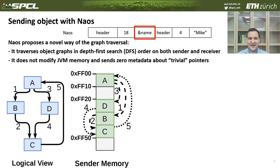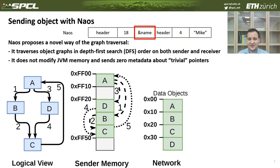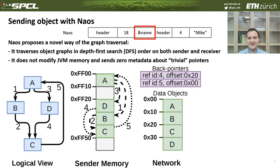Pointers four and five are extra pointers to already-visited objects during DFS traversal. The key idea: we send the objects in the same order as visited in DFS — A, B, C, and D — and then we only send information about these back pointers. In most data structures and workloads, we don't have back pointers, so we just send the objects with zero metadata. But in this example, we send extra information indicating that pointers four and five are back pointers.